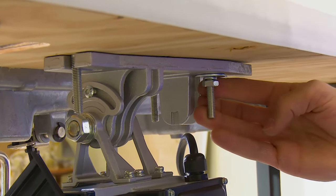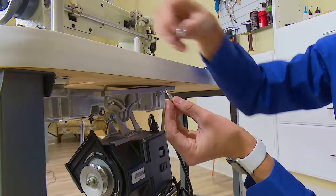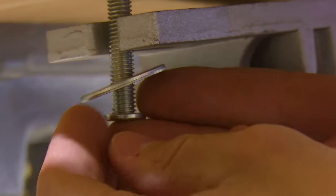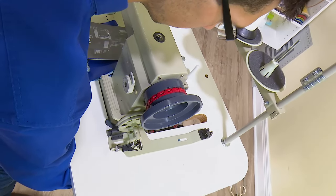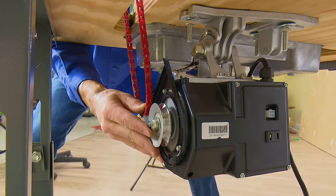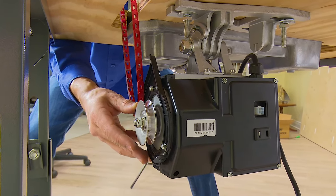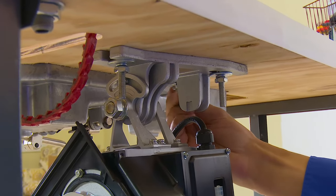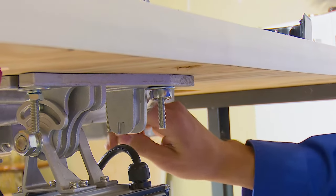Then place the final washer, lock washer, and nut on the third carriage bolt. Finger tighten it as well. You can now adjust the Workhorse servo motor left or right so that it lines up with the belt slot in the table. Once the motor is lined up appropriately, all of the nuts on the carriage bolts can be tightened.